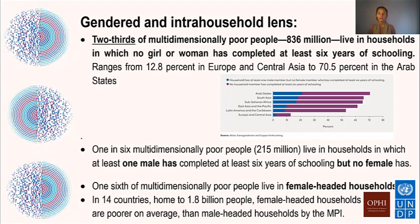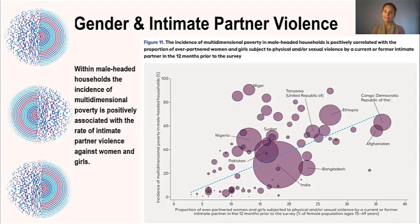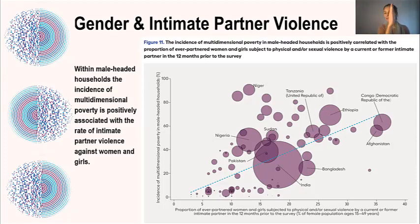We also comprehensively disaggregate the global MPI by female and male-headed households, finding that one in six MPI poor people live in a female-headed household. Looking at intimate partner violence, particularly in male-headed households, the proportion of ever-partnered women and girls subject to physical and sexual violence in the 12 months prior to the survey tends to be higher in poorer countries, though it's not a perfect relationship — even some of the poorest countries like Niger show lower levels of domestic violence, whereas DRC may show higher.